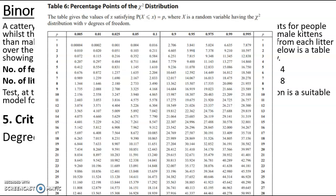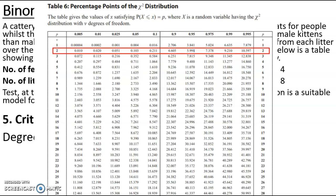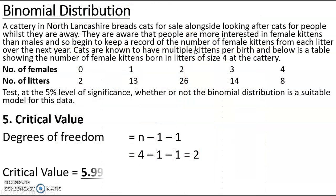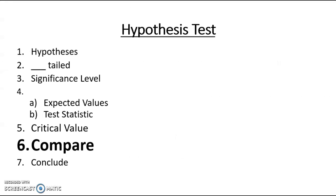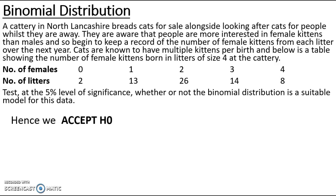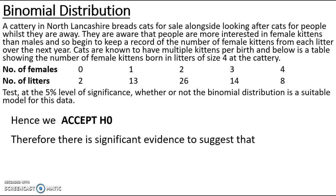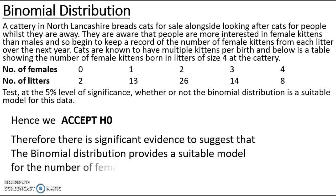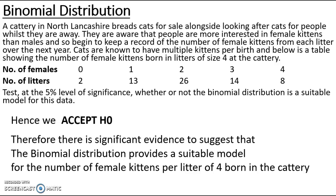Looking at table 6 percentage points for the chi-squared distribution: at 2 degrees of freedom and the upper 5% significance level, we look down the 0.95 column, giving a critical value of 5.991. On the chi-squared diagram, the critical value of 5.991 is the cutoff point and the test statistic of 2.457 falls in the accept region — accepting the belly, rejecting the tail. Hence we accept H0: there is significant evidence to suggest that the binomial distribution does provide a suitable model for the number of female kittens per litter of 4 born at the cattery.